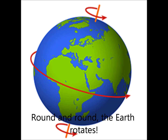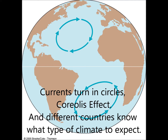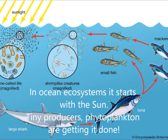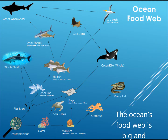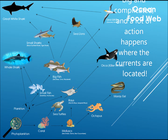Round and round the earth rotates, the continents are shifting 'cause they're sitting on plates. Currents turn in circles — Coriolis effect — and different countries know what type of climate to expect. In ocean ecosystems it starts with the sun; tiny producers, phytoplankton, are getting it done. The ocean's food web is big and complicated, and a lot of action happens where the currents are located.